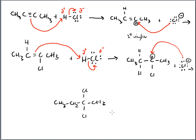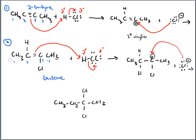Organic is a build-up process. Let's name the molecules. The starting alkyne: 1, 2, 3, 4 — it's a butyne, and the triple bond is at carbon 2, so this is 2-butyne. 2-butyne reacts with HCl to give an alkene product. Let's name that alkene: 1, 2, 3, 4 — it's a butene, with the double bond at carbon 2.